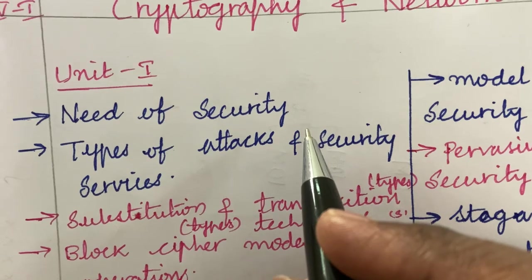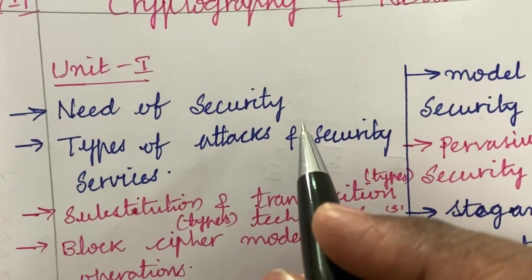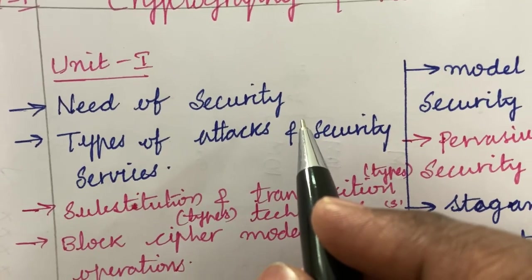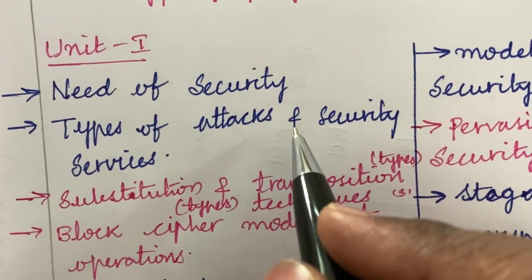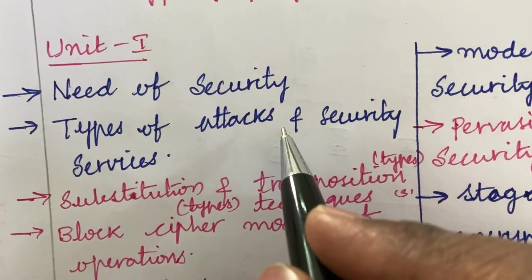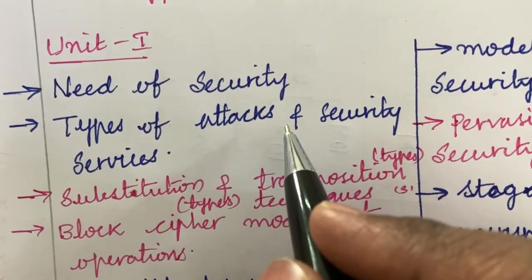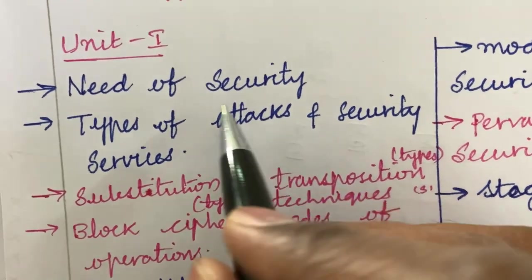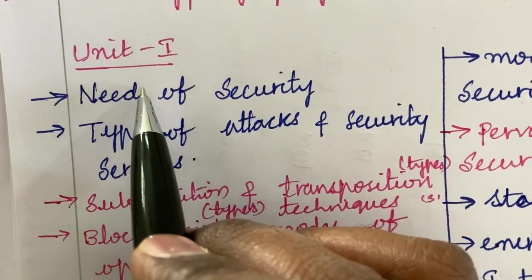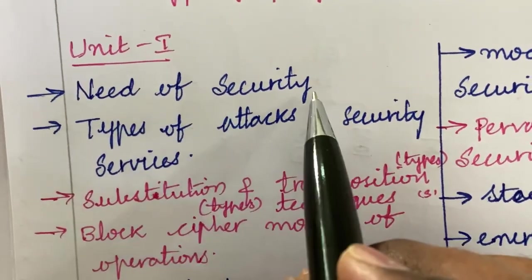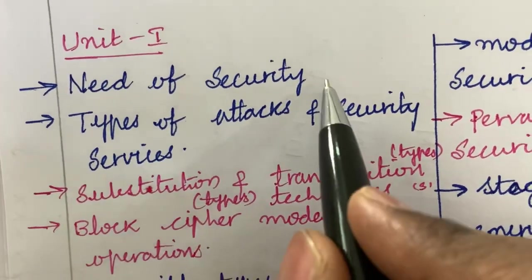I have done a video on how you are going to get the questions in Part A and Part B. If you haven't gone through it, please go and watch it. I am going to cover short questions as well as long questions as per the new pattern. The first and foremost question from Unit 1 is the need for security, types of attack, and security services.